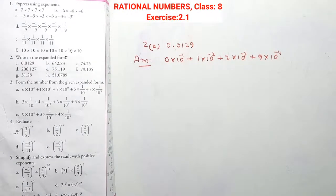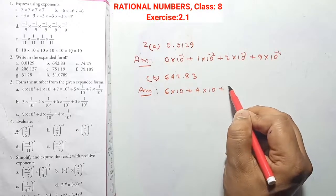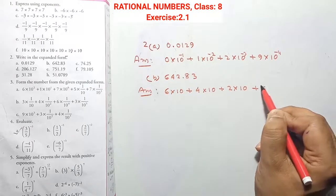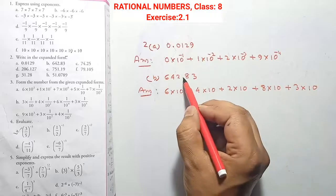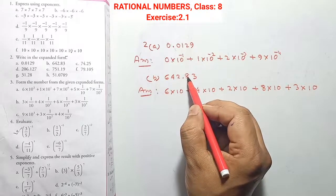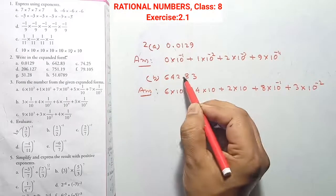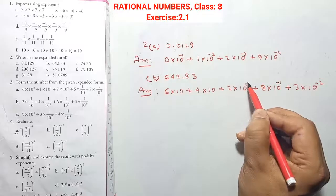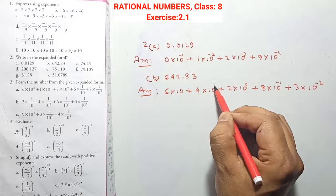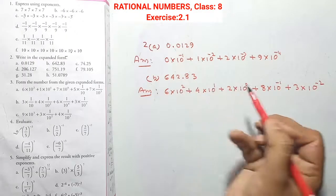To write the expanded form of 0.0129, we see: 6 into 10 + 4 into 10 + 2 into 10 + 8 into 10 + 3 into 10. This decimal is at position minus 1, the other minus 2. The unit place value is 0, the next is 1, and this is 2. When decimal is the power, we use a positive sign before the decimal and negative sign after.